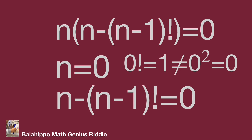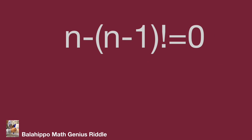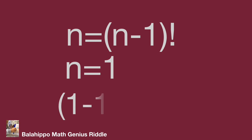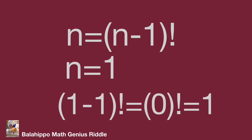Then from n minus (n minus 1) factorial equals 0, we get n equals (n minus 1) factorial. Let's check n equal to 1: then (n minus 1) factorial equals (1 minus 1) factorial equals 0 factorial equals 1. Since n equals 1 equals (n minus 1) factorial, n equal to 1 is the answer.